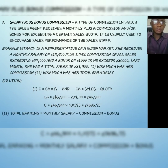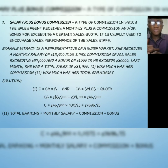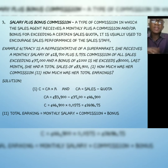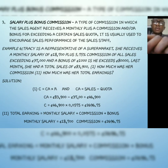For her total earnings: Tracy gets a monthly salary, a commission, and a bonus. Monthly salary = 18,700. Commission = 2,696.75. Since her total sales of 83,900 exceeded 80,000, she earns a bonus of 1,000. Total earnings = 18,700 + 2,696.75 + 1,000. Add all three together to get Tracy's total earnings.